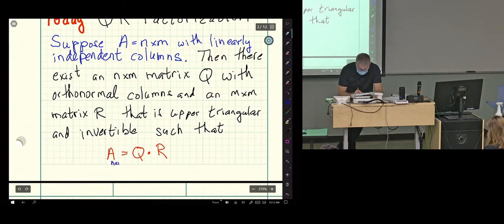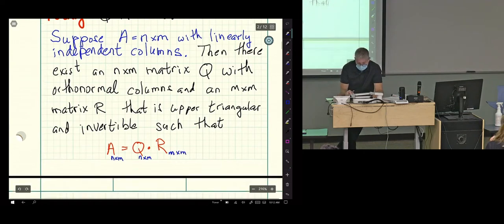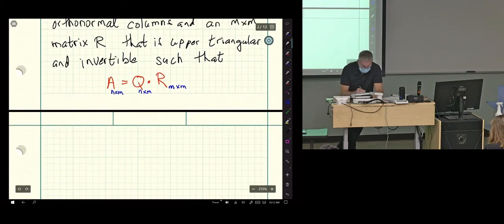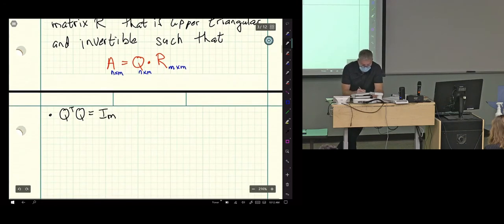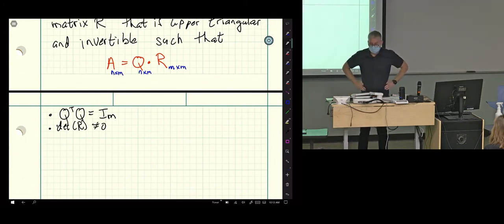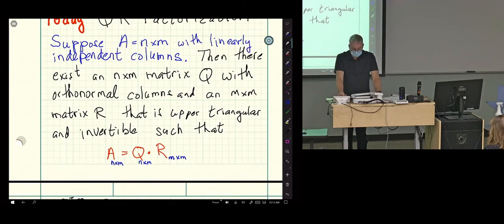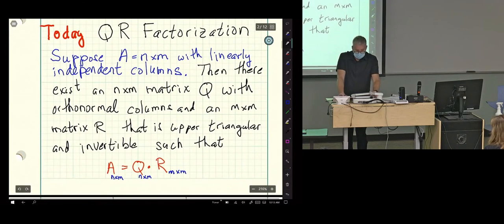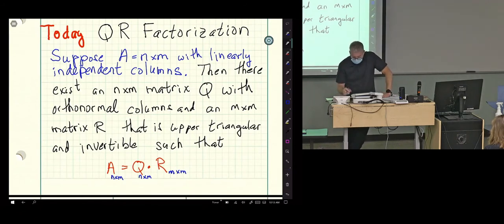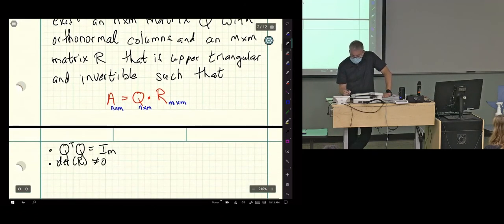Such that our matrix A can be written as Q times R. So this was N by M, this is still N by M, this is N by M. Q transpose times Q is the M by M identity matrix and determinant of R not equal to zero. Cool. So you guys are not afraid, I think, of matrix factorizations now, so this is a little bit different than LU.